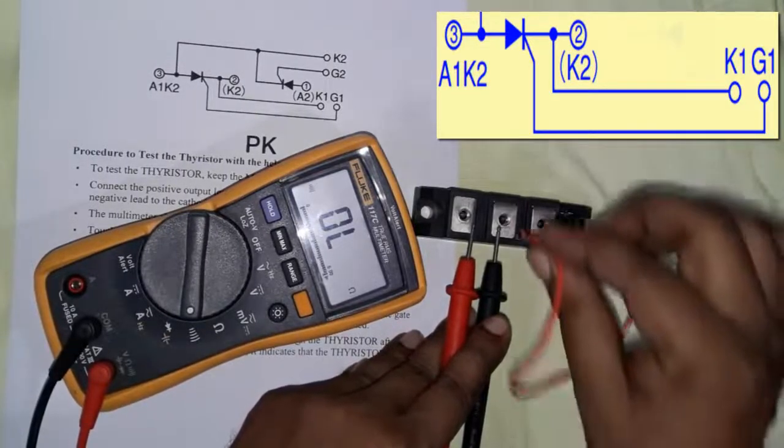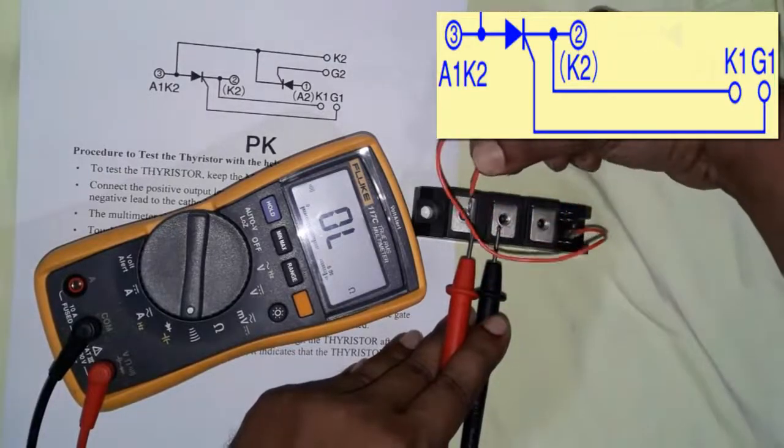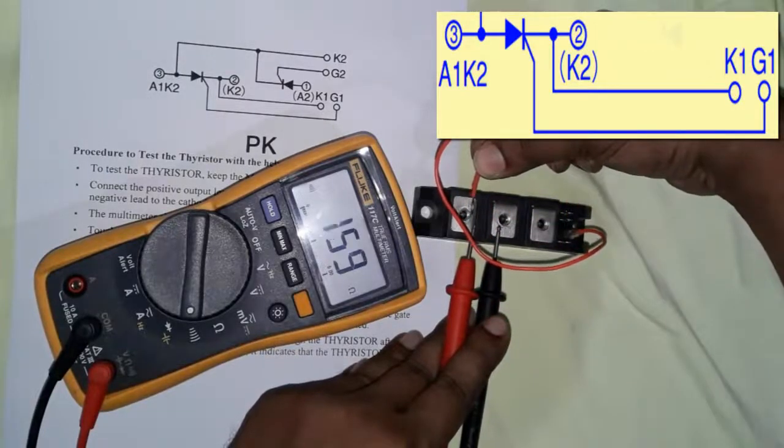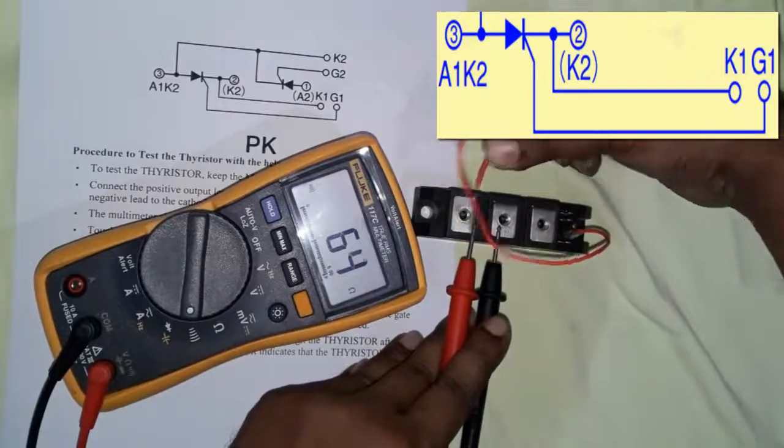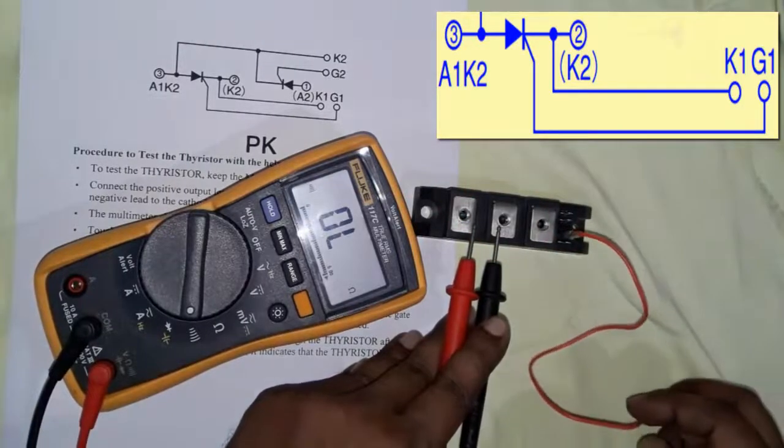When touching gate one with the anode, the meter will show continuity. Without touching, it will show open. When we touch it, it shows continuity closed.